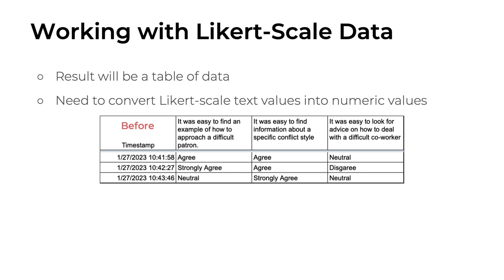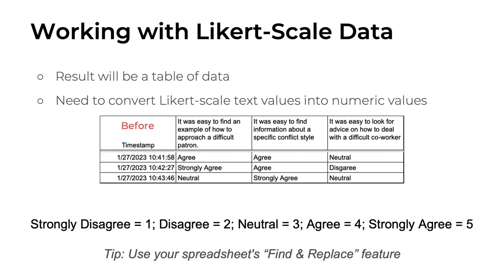So after working with several participants, you might have data that looks something like this. Each row is a participant, and each column represents one of the Likert scale items. In the individual cells, you can see the participants' responses, such as agree, disagree, or neutral. To work with this data, we need to convert the text-based responses into numbers. Typically, if you're working on a strongly disagree to strongly agree scale, you would replace strongly disagree with a value of one, disagree with two, neutral with three, agree with four, and strongly agree with five. This way, you have a systematic way to convert the text values into numeric values, with less agreement resulting in lower values and higher agreement resulting in higher values.